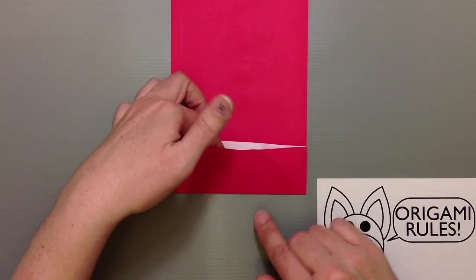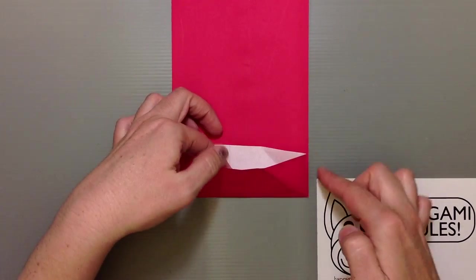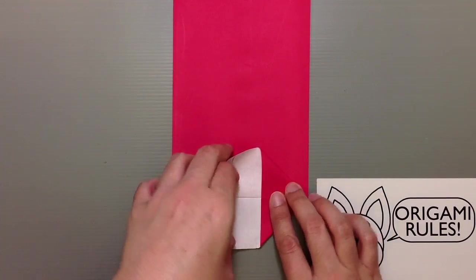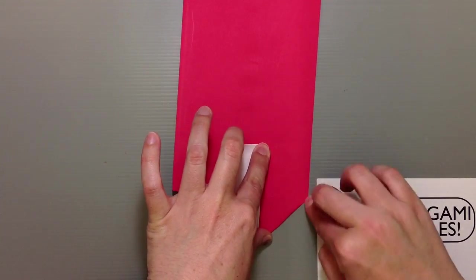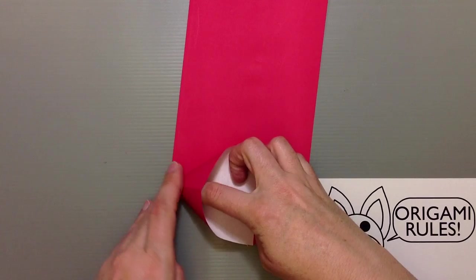Once you've folded that up, then go ahead and open things up here and put down a little pressure on the side so that this part can open up and reveal a nice little triangle here. And I'm going to do the same thing on this side too.